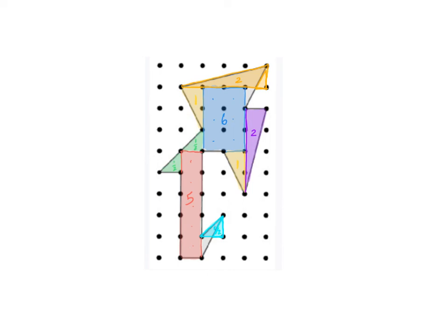The last thing I need to do is add up all of my totals. The blue is six, orange is two, purple is also two, I have two yellows, I have a red, I have two greens — a half and a half — and then the teal light blue, which is a half. If I add all that up: six plus two plus two is ten, plus one plus one is twelve, plus five is seventeen. Two halves makes a whole, so that would be eighteen. Eighteen plus one half gives me eighteen and one half square units.